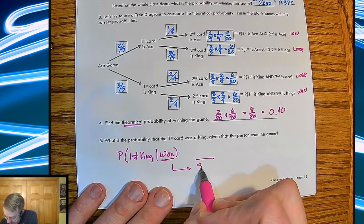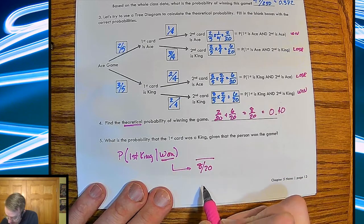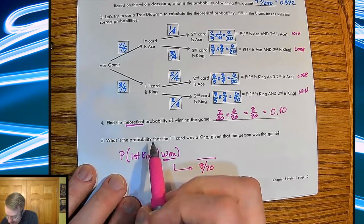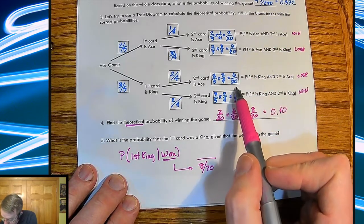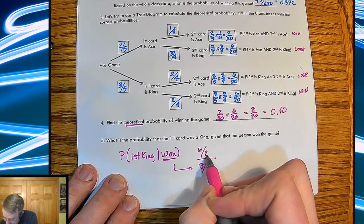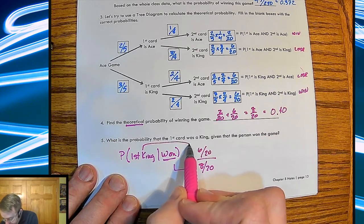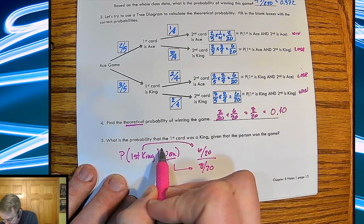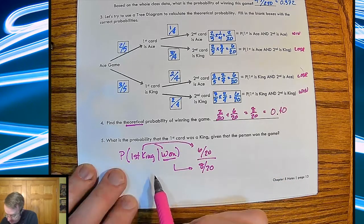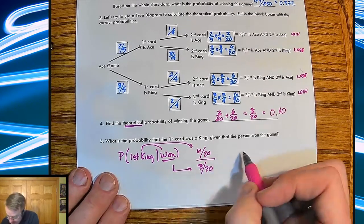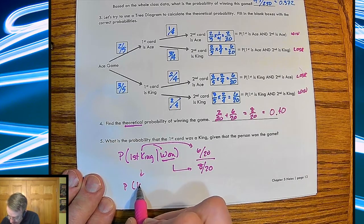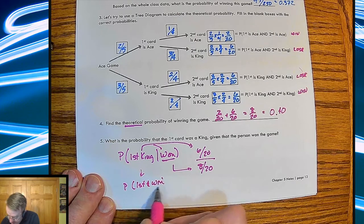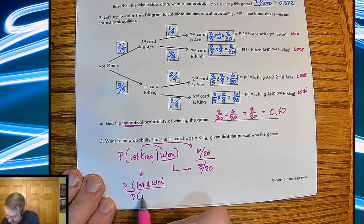Okay, so that's going to go on the bottom because the given always goes on the bottom, remember. So that probability there is eight out of twenty. What's the probability that you got a king first? So that's going to be up in this one right here. So that's going to go there, and that's actually both of those. So because again, remember what you end up happening here is this is equal to P(first and win) divided by P(win).